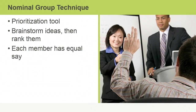The nominal group technique is a prioritization tool that lets you guide a group of stakeholders in identifying which requirements are the most important. The technique can include brainstorming ideas and then ranking them. An advantage of the nominal group technique is that it lets each stakeholder in a group have a say about what's most important to them.